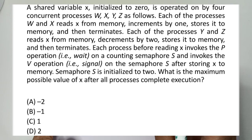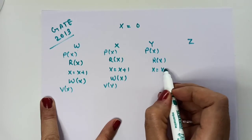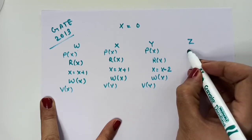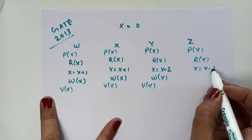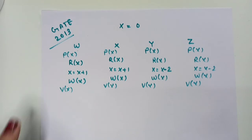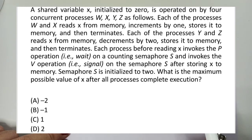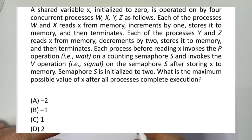Each of the processes Y and Z reads x from memory, decrements it by two, stores it to memory, and then terminates. Before reading x, each process invokes the P operation on a counting semaphore s. After storing x to memory, V operation is called. Note this is a counting semaphore since values are +1 and -2. The semaphore s is initialized to 2.